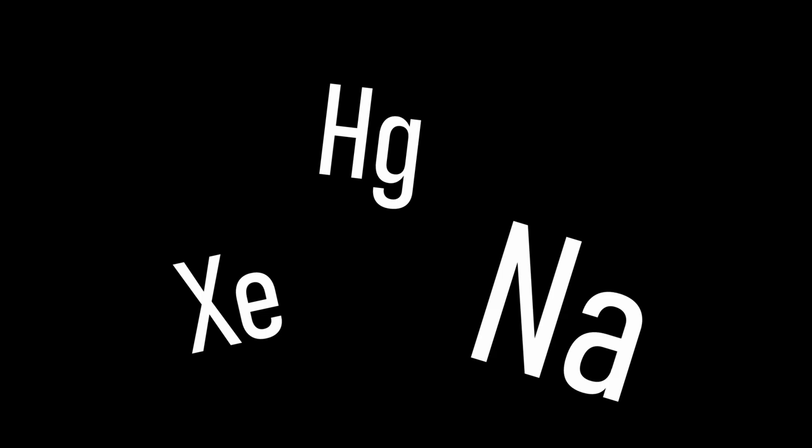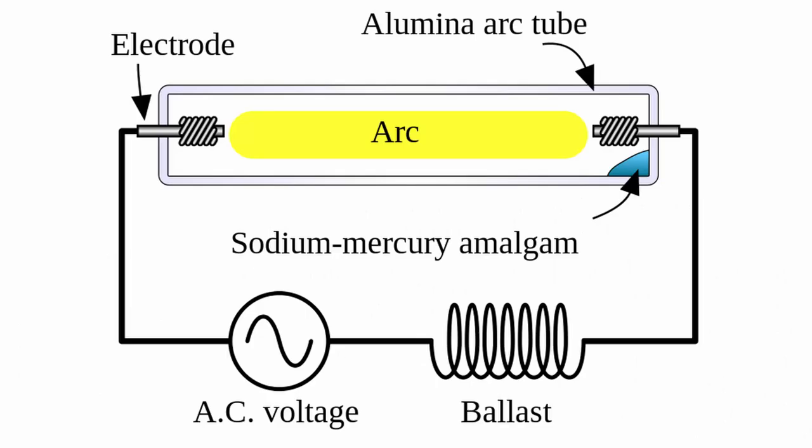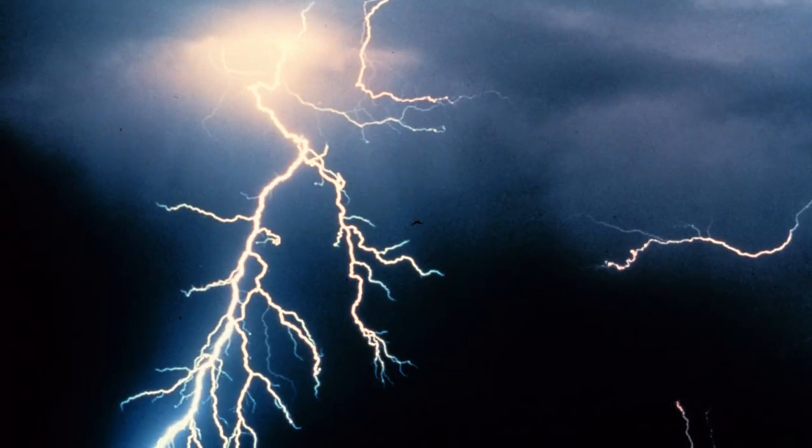When the lamp needs to be lit, a pulse of voltage is applied to the arc tube, which sends an arc through the xenon. This then provides the energy needed to evaporate the mercury, so that an arc travels through the mercury, which in turn vaporizes the sodium, so that the arc travels through the vaporized sodium.